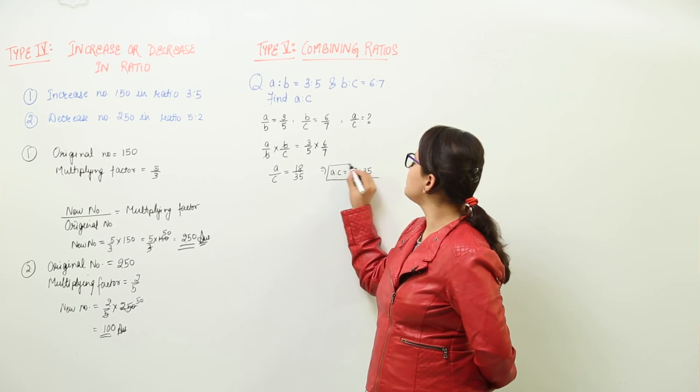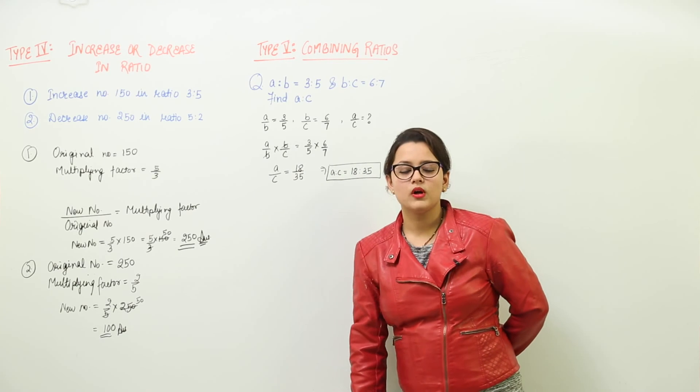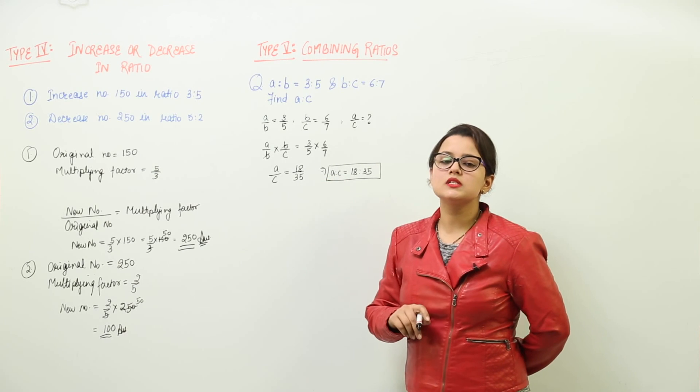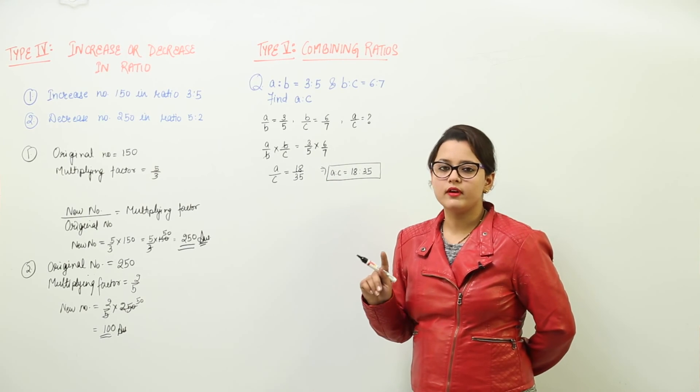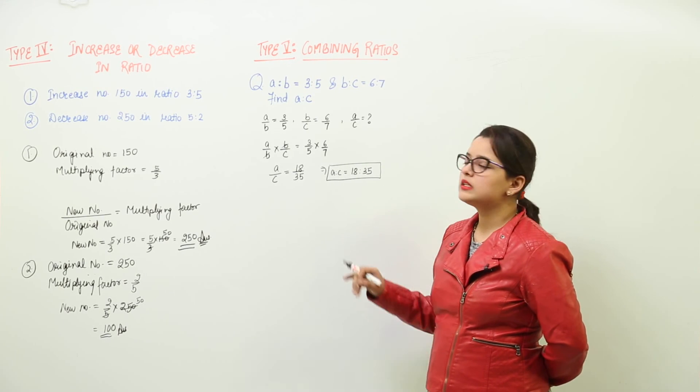And we know this is the simplest form because it has no other factor common than 1, or you can say the HCF of both numerator and denominator is only 1. So we can say that A is to C will be 18 is to 35.